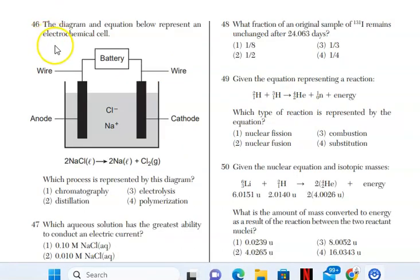We're up to question 46. We're looking at an electrochemical cell, and we're asked which process is represented by this diagram. It is definitely not chromatography. That's a separation of a mixture. It's not distillation, which is separation of a mixture, in that case a solution. It is definitely electrolysis. We're using electrical energy to force a redox reaction to happen, and polymerization is an organic reaction.